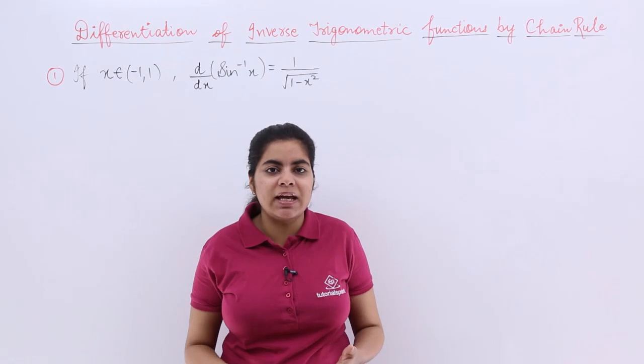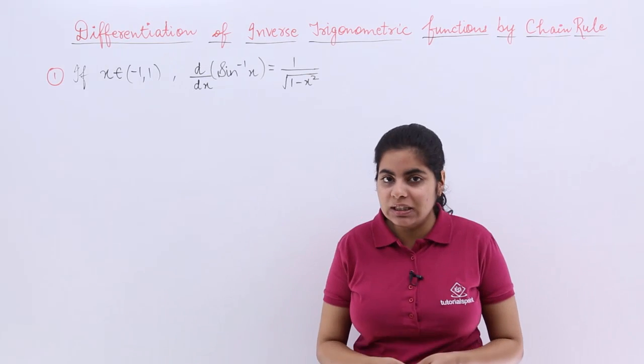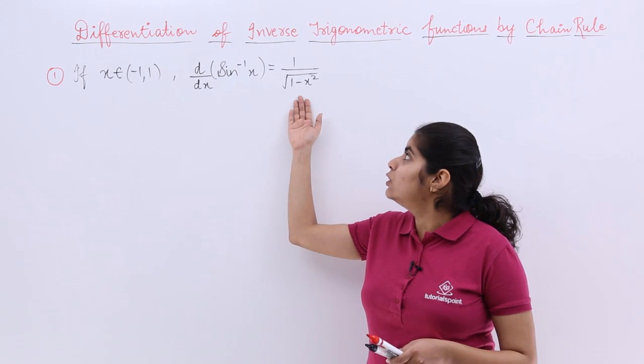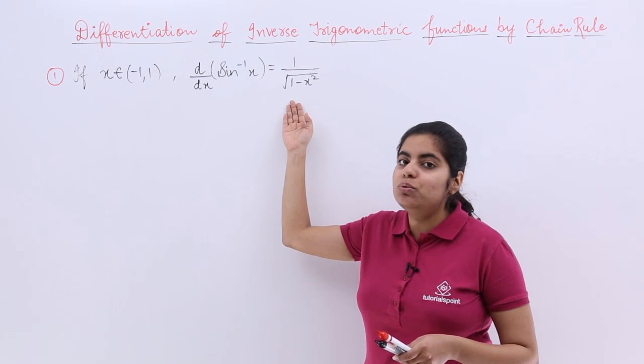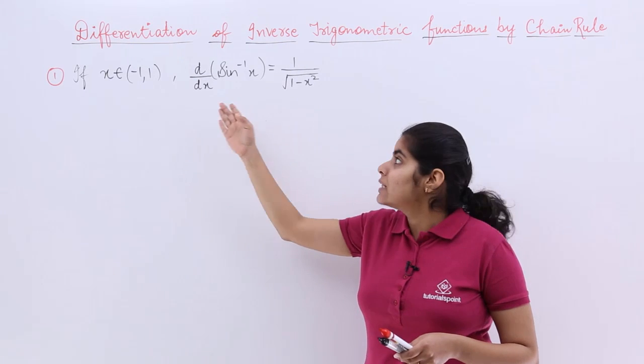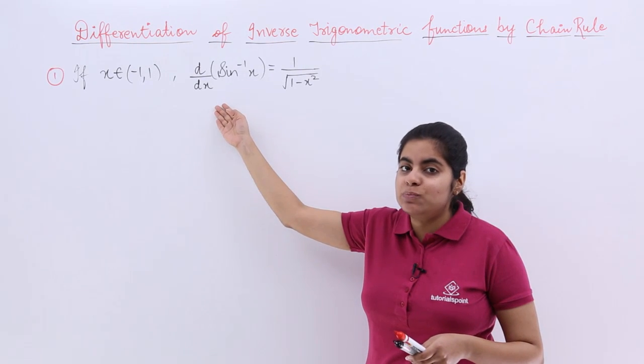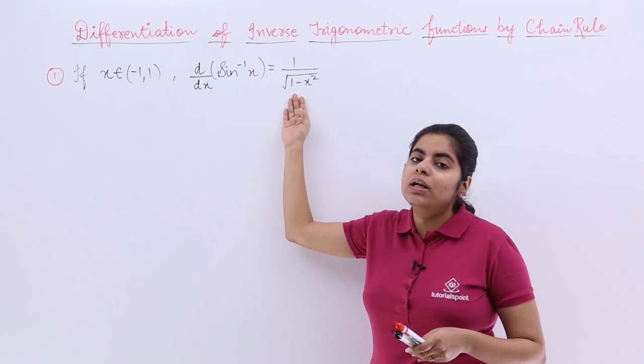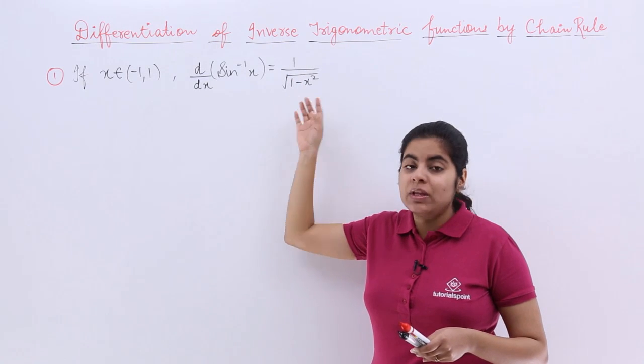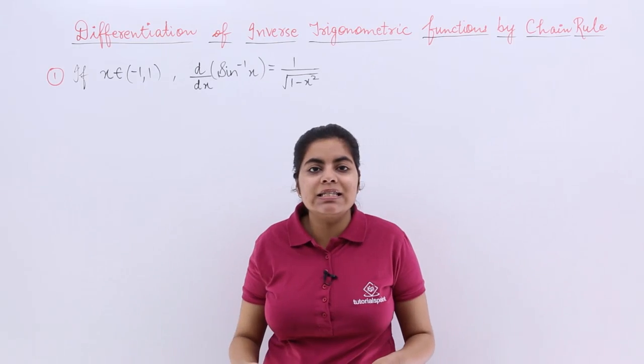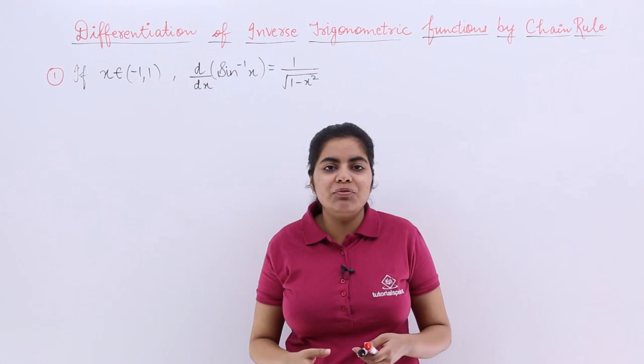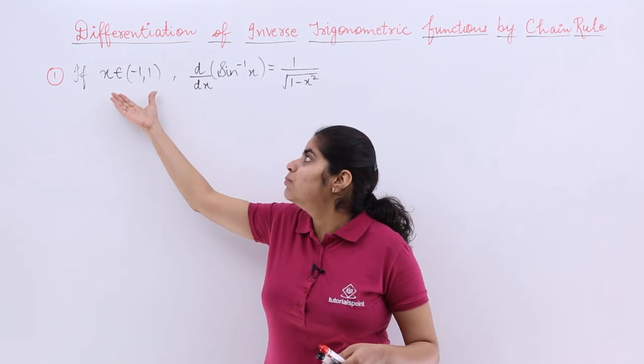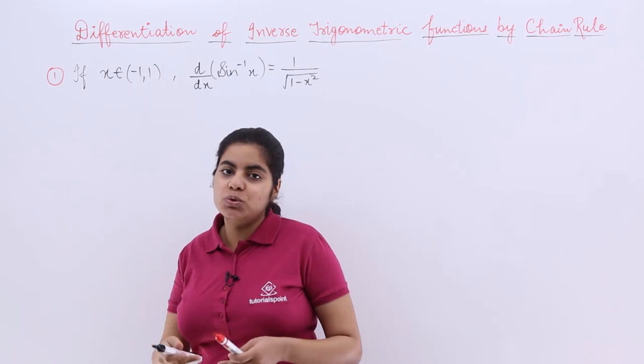Now, what is the differentiation of sine inverse x? That you have to learn and memorize: it is equal to 1 upon under root 1-x square. The condition on x lies because it is sine inverse x, so you have to remember that x must belong to minus 1 to 1.